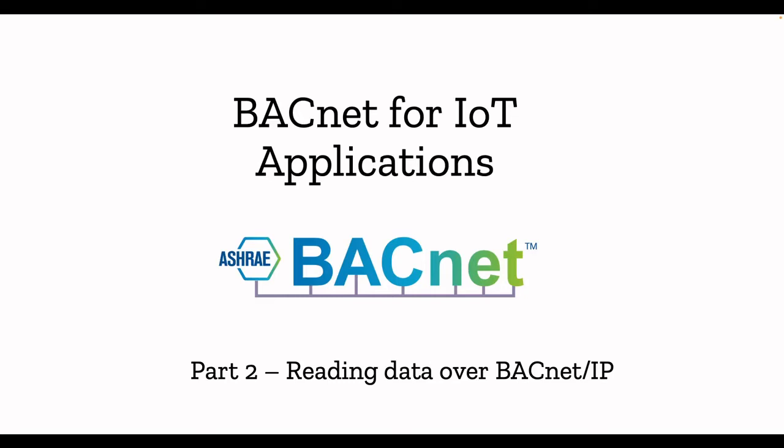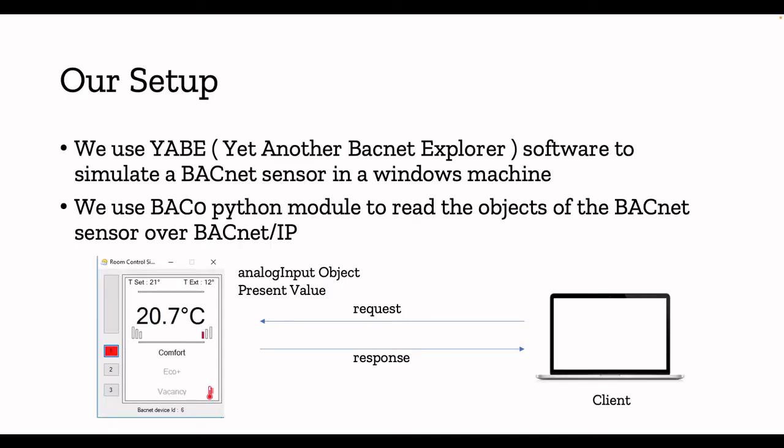This Part 2 is going to be a completely hands-on video. Our setup involves a free software called APE, available for both Windows and Linux — I'll be installing it on my Windows machine. I'll simulate a BACnet device on Windows, and then write a simple client program to read BACnet IP data. You can run that client on a laptop, Mac, or even a Raspberry Pi.